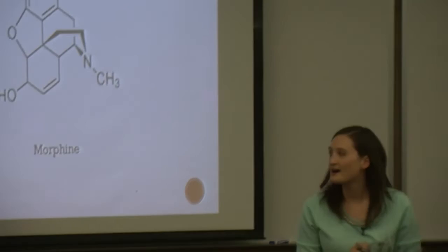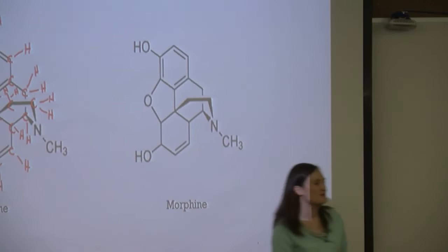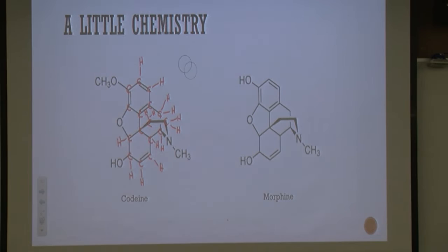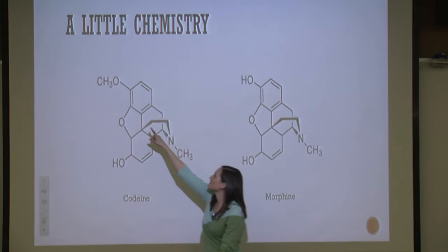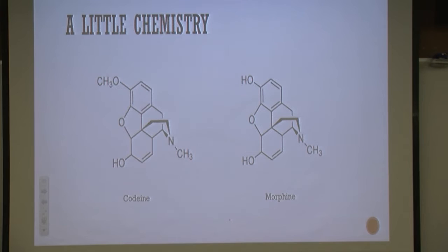Codeine and morphine are both opiates and have very similar structures — there are only actually a couple of atoms different. We have an extra carbon and two hydrogens at the top — just a CH3 group. That small change in atoms makes a big difference in how they affect the body. Codeine is a little bit less effective as a painkiller, but it's also a little bit less addictive.